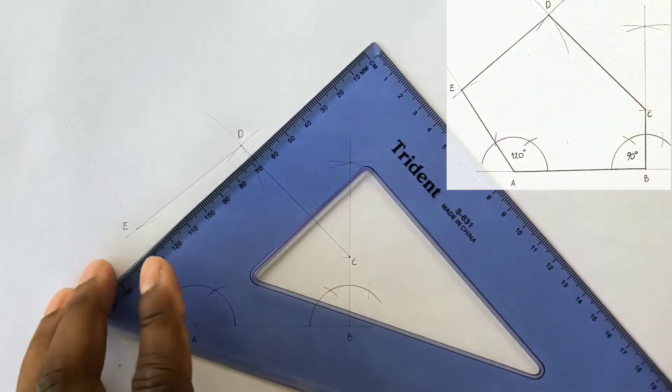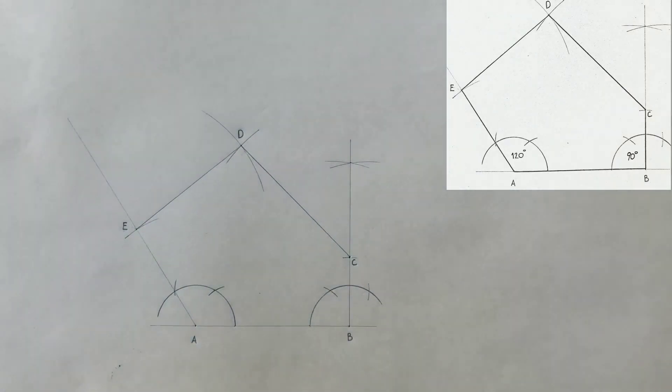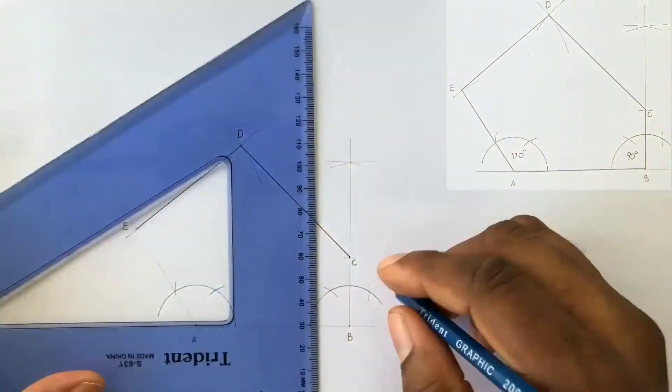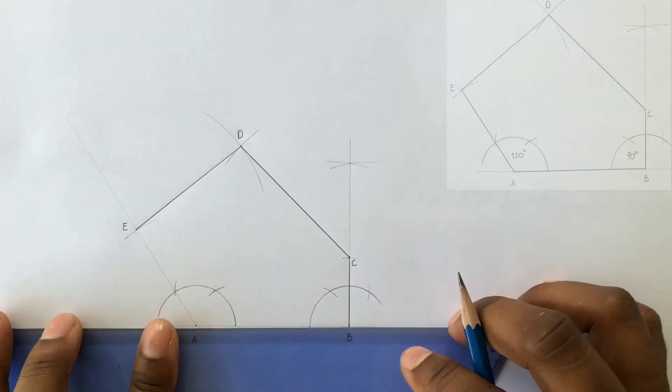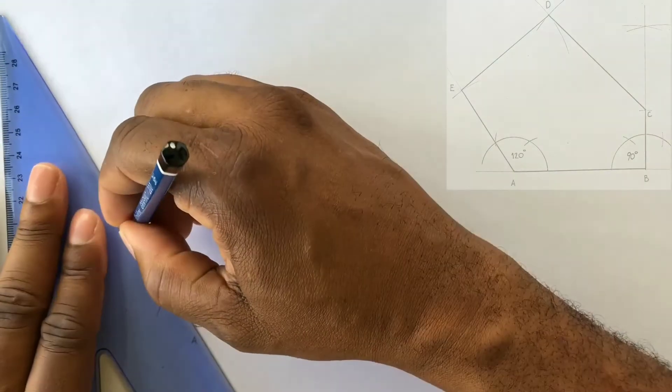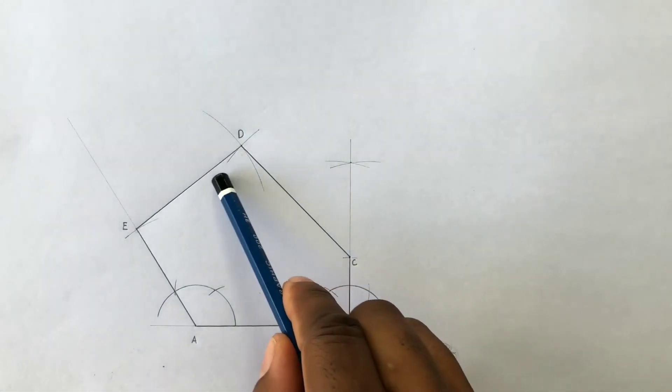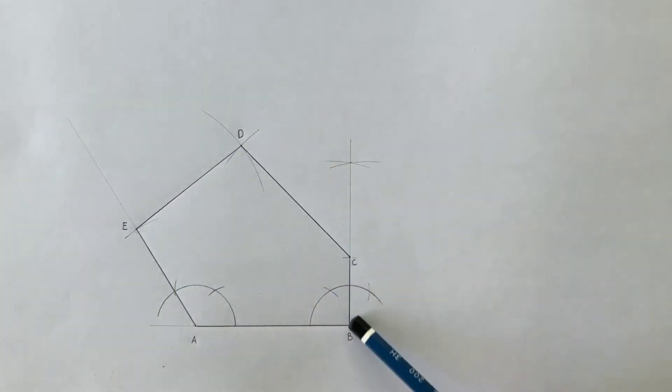Your irregular pentagon is now complete. Outline your irregular pentagon. This irregular polygon consists of unequal angles and unequal length of sides.